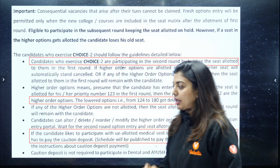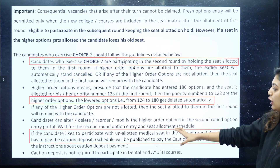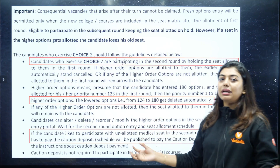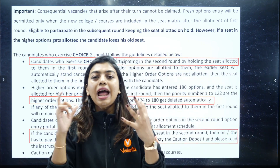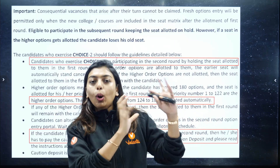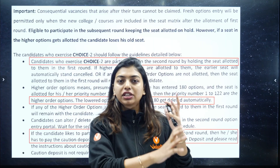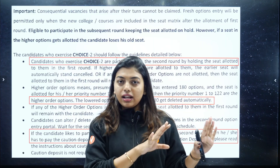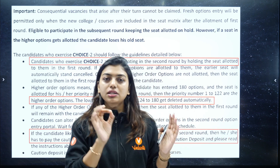Candidates can alter, delete, reorder, or modify the higher order options. But BAMS students, do not add options now because for you the option entry has not opened — unlike engineering, agriculture, or veterinary science students. You can add options when your choice filling starts.